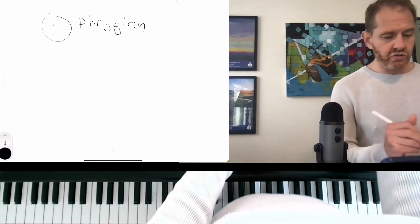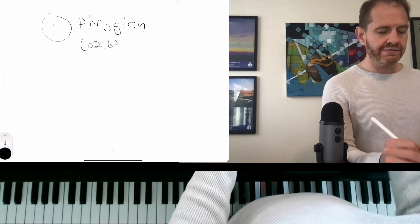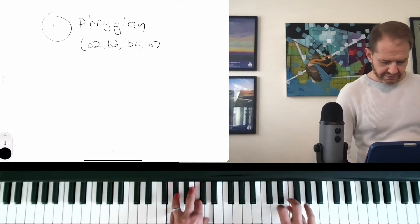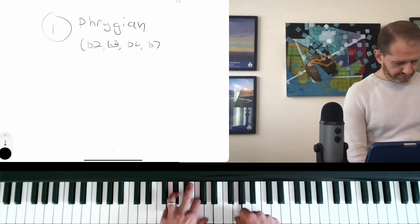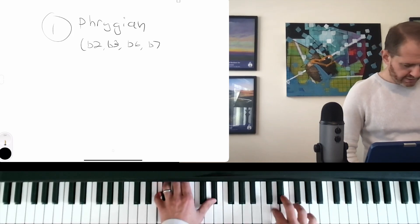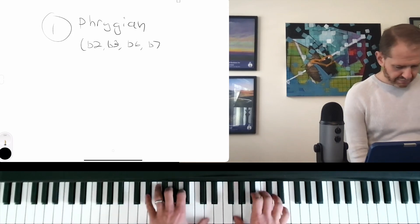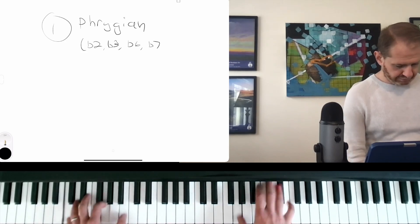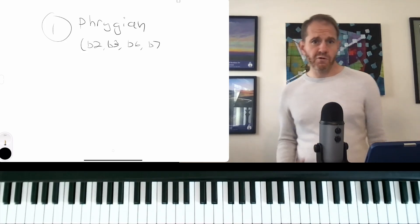So Phrygian, as compared to the major scale, so G Phrygian compared to G major has flat two, flat three, flat six, and flat seven. So I think that's option one, especially in terms of forming chords.